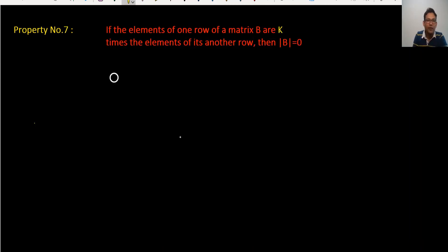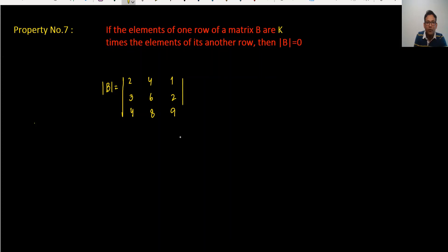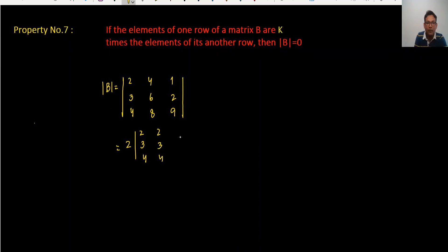Property 7: if the elements of one row are k times the elements of another row, then the determinant is zero. For example, matrix B = [2 3 4 / 4 6 8 / 1 2 9] — the second row is exactly double the first row. Taking 2 as a common factor from row 2 leaves two identical rows, and by property 3 the determinant becomes zero.